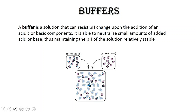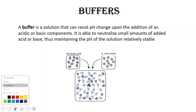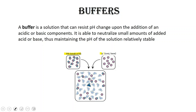A buffer is generally made between a weak acid and its conjugate base, or we can have a weak base and its conjugate acid. In solution, we have water molecules, some acid molecules, and some conjugate base ions floating around. Notice that we have both the acid and the conjugate base in solution along with the water molecules.